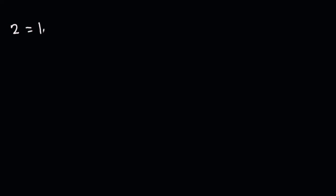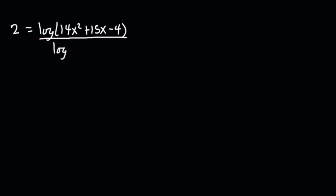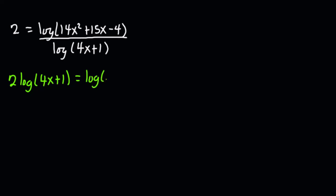Let me recall — we got: 2 is equal to log of (14x² + 15x − 4) divided by log of (4x + 1). To continue, I'm going to cross multiply, so I get: 2·log(4x + 1) equals log of (14x² + 15x − 4).